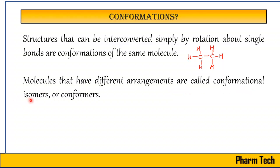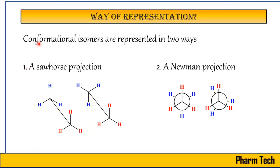Those different structures are conformational isomers of each other. What I have described so far is in 2D format. When we look at conformational isomers, we need to represent the structure in a special way. Conformational isomers can be represented in two ways: first, the sawhorse projection, and second, the Newman projection.